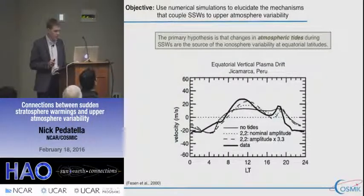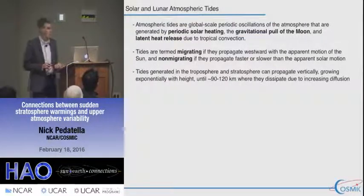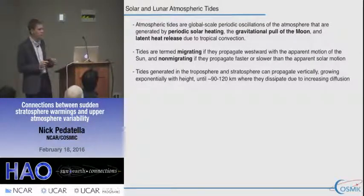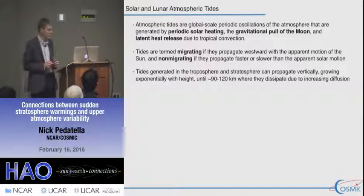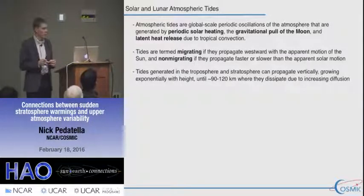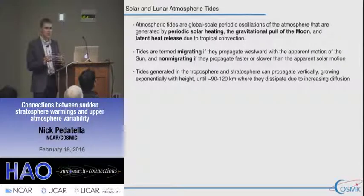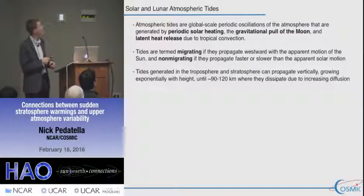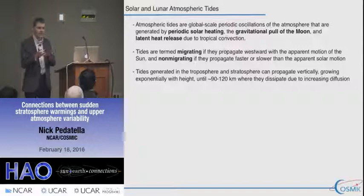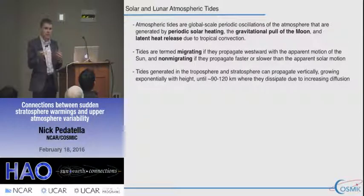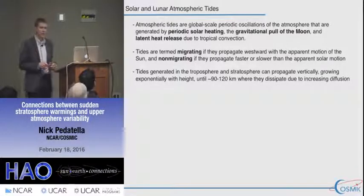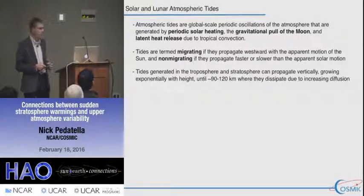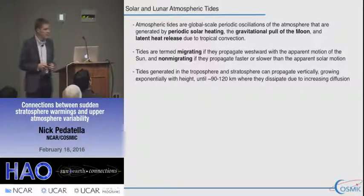Before going into the simulations, a brief background on atmospheric tides. Atmospheric tides are global-scale periodic oscillations of the atmosphere generated by several processes: periodic solar heating during daylight hours, gravitational forcing from the moon (similar to ocean tides), and latent heat release due to tropical convection. We typically refer to tides as migrating if they propagate westward with the apparent motion of the sun, and non-migrating if they propagate either faster or slower. A migrating tide appears longitudinally invariant at fixed solar local time, while a non-migrating tide displays longitude variability.